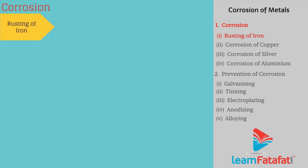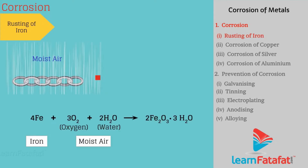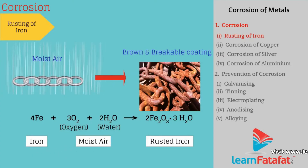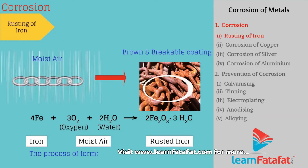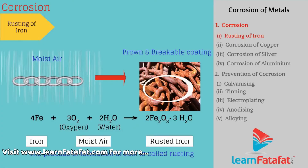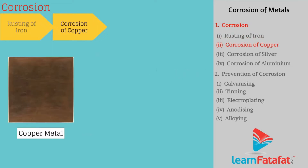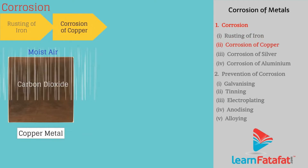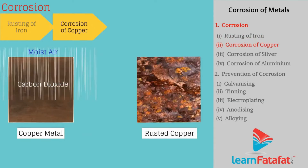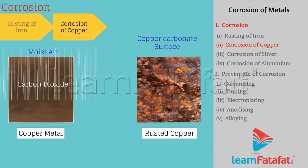Rusting of iron. Iron reacts with moist air and forms a brown, easily breakable coating on the surface called rust. The process of formation of rust is called rusting. Corrosion of copper. Copper metal reacts with moist carbon dioxide and air, loses its shine, and forms a green coating of copper carbonate on its surface.